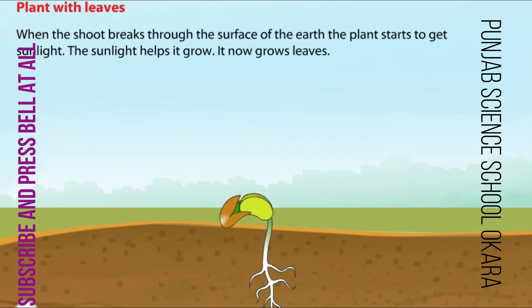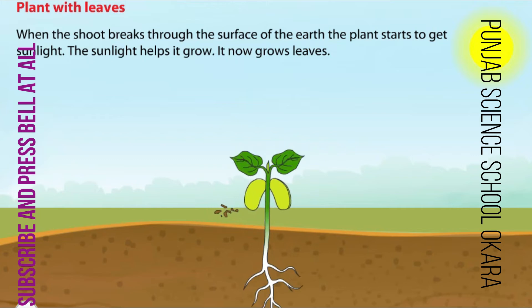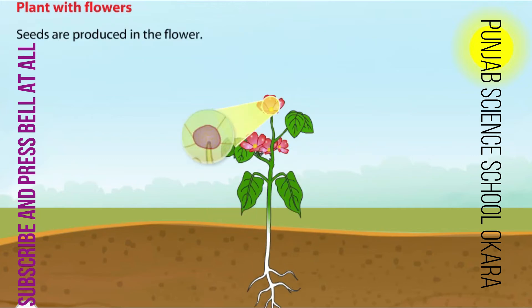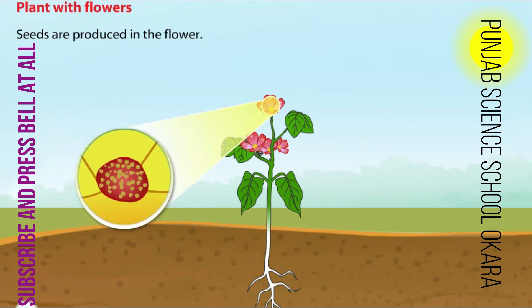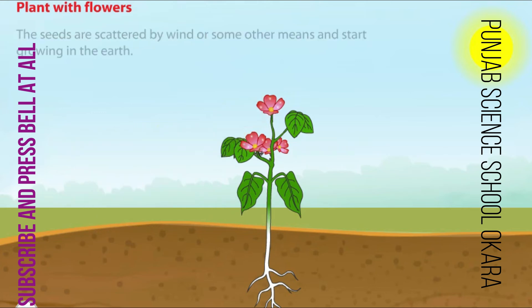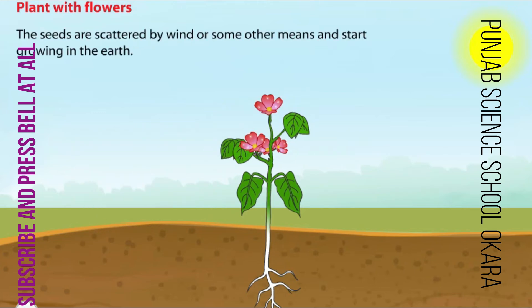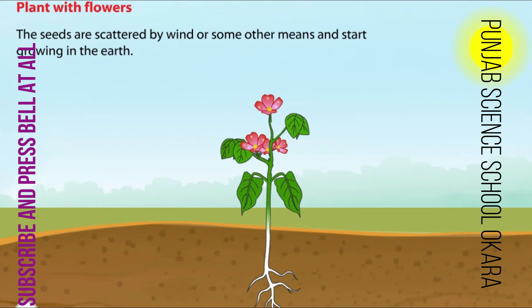After the shoot of the plant breaks through the earth, it gets sunlight. Sunlight helps it to grow. The plant now grows leaves. Seeds are produced in the flower. The seeds are scattered by wind or some other means and start growing in the earth. Then the life cycle begins for new plants.